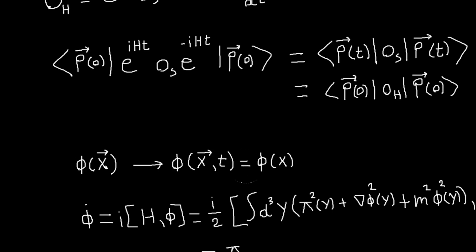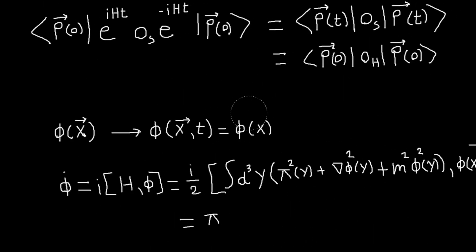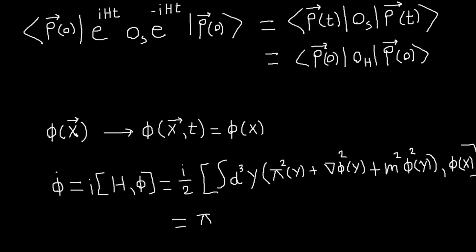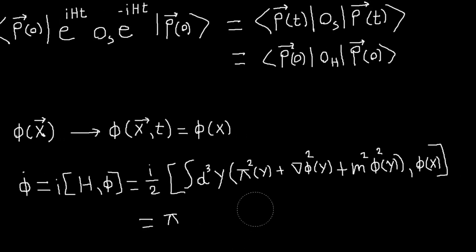Now, so first, the first thing that you can do before we find what that is, is we can compute the Heisenberg equation of motion for our fields. So our fields, even the Heisenberg fields will still satisfy the same commutation relations. So we can compute these things. So in the case of the Klein-Gordon field, the time evolution of phi will be given by the commutator of Klein-Gordon Hamiltonian and phi.